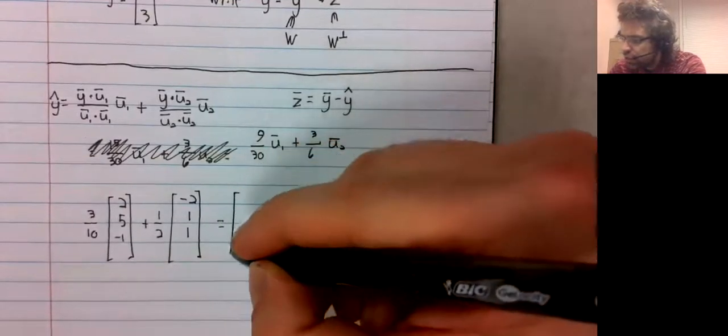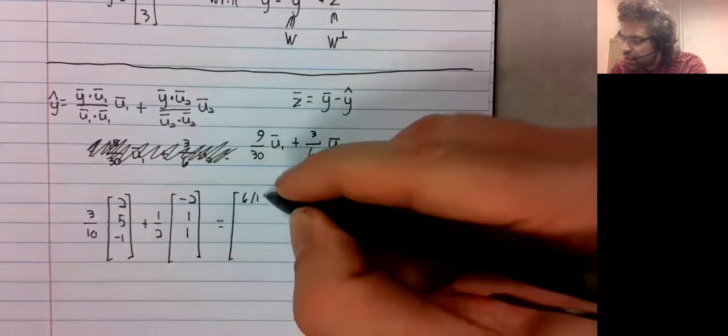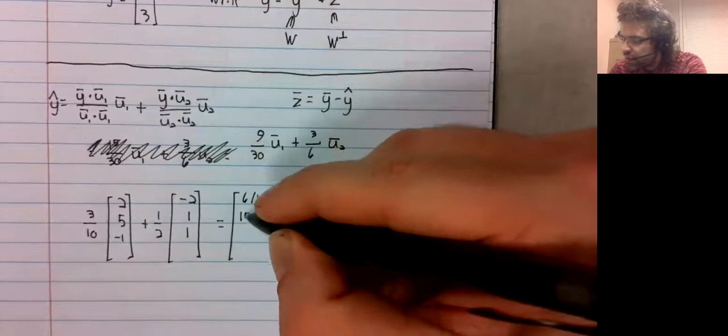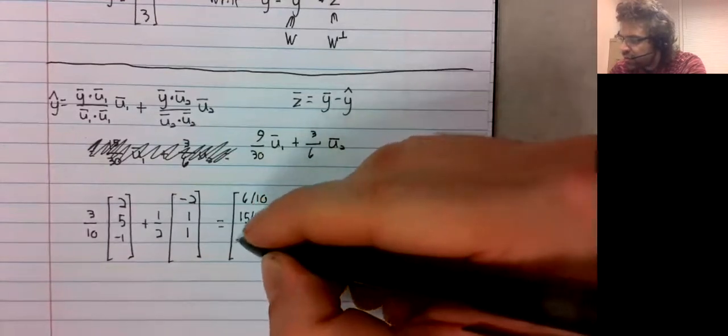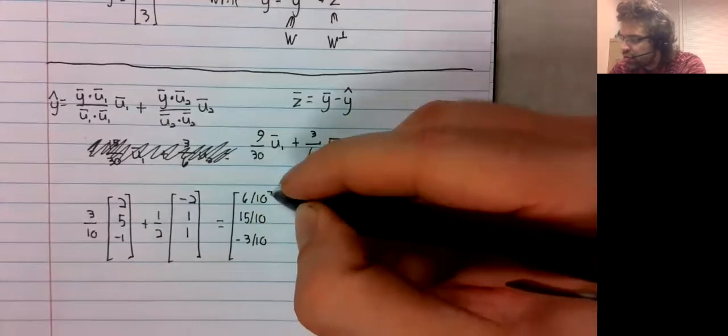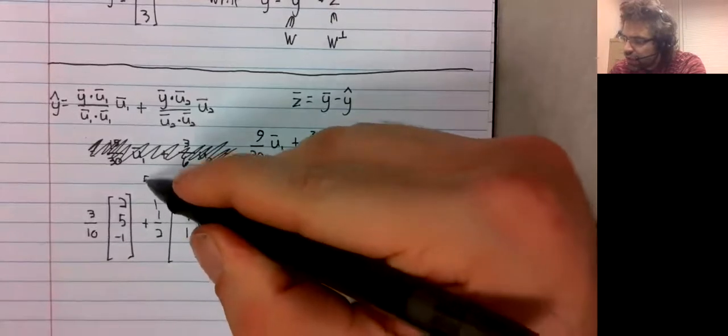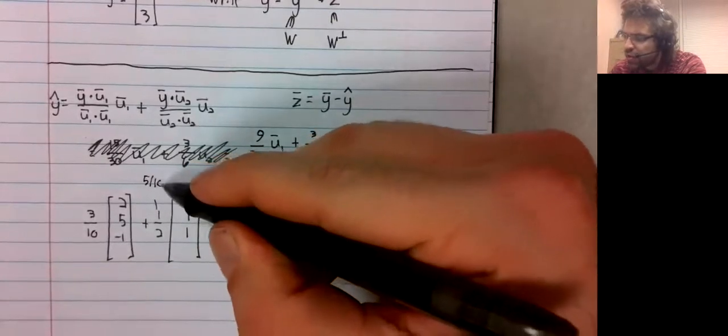So, okay, 6 tenths, 15 tenths, negative 3 tenths, 1 half is 5 tenths.